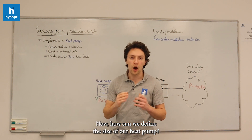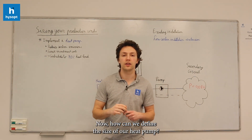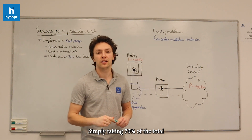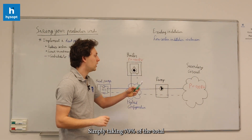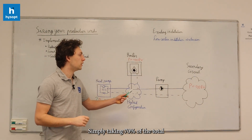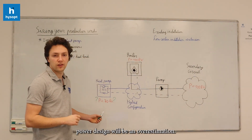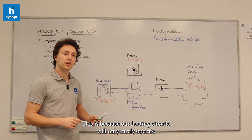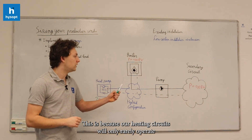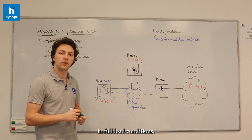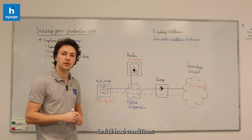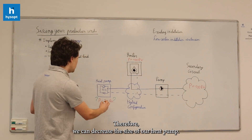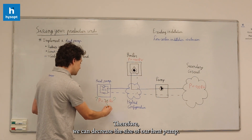Now, how can we define the size of our heat pump? Simply taking 70% of the total power design will be an overestimation. This is because our heating circuits will only rarely operate in full load conditions. Therefore, we can decrease the size of our heat pump.